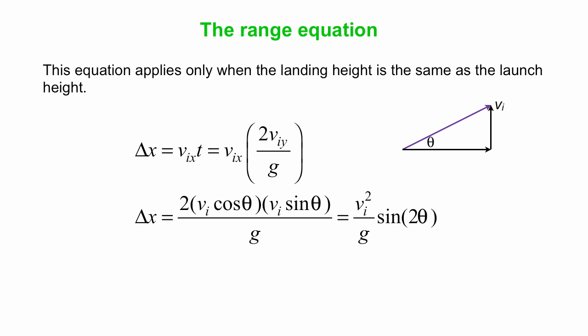Look at this triangle. Here's VI along the hypotenuse. VI cos theta is VIX, VI sine theta is Viy. So VIX times 2Viy over G you can write as 2 VI cos theta, VI sine theta over G. Using a trig identity, 2 cos theta sine theta is the same as sine 2 theta. You can boil it down to range: Delta X is VI squared over G times sine 2 theta.